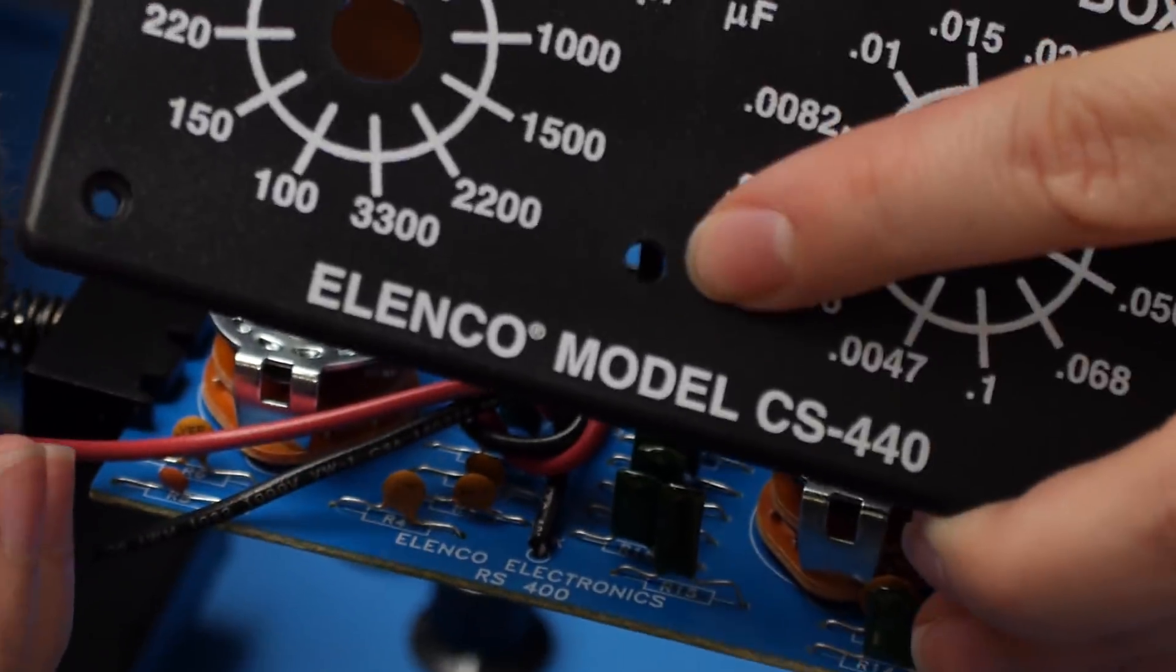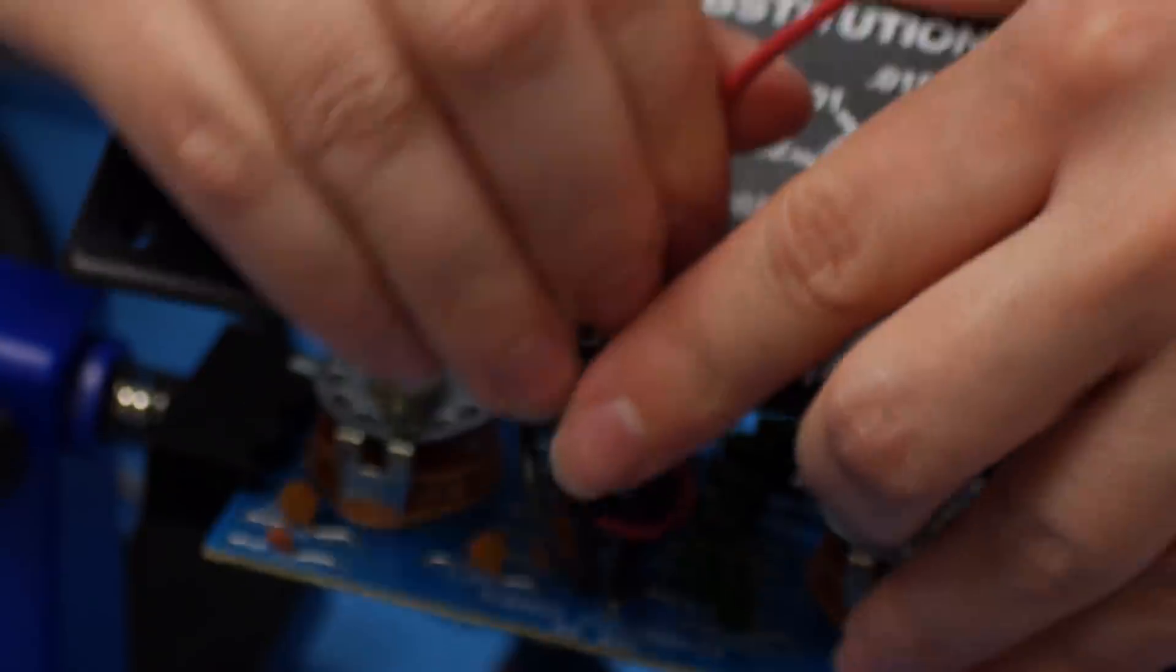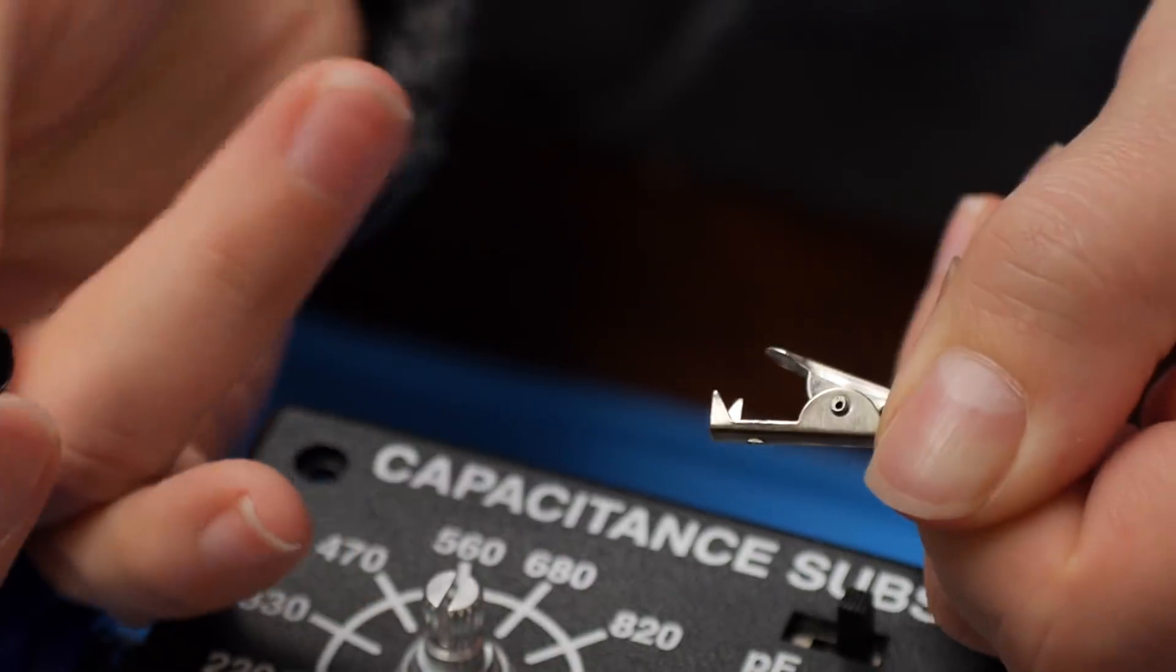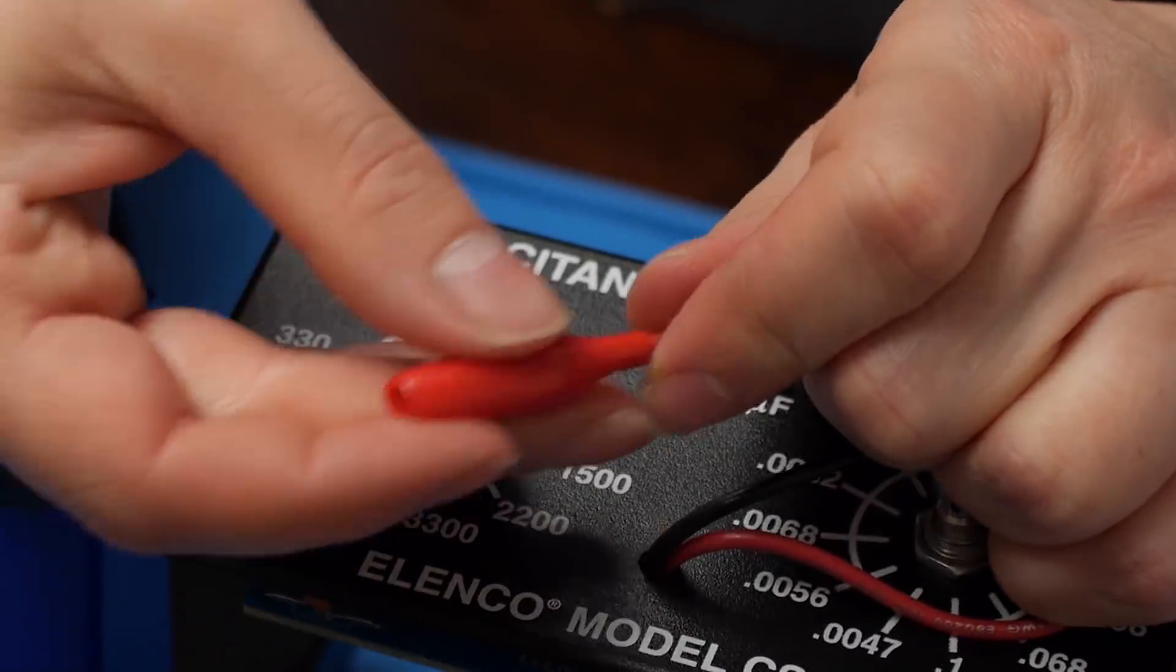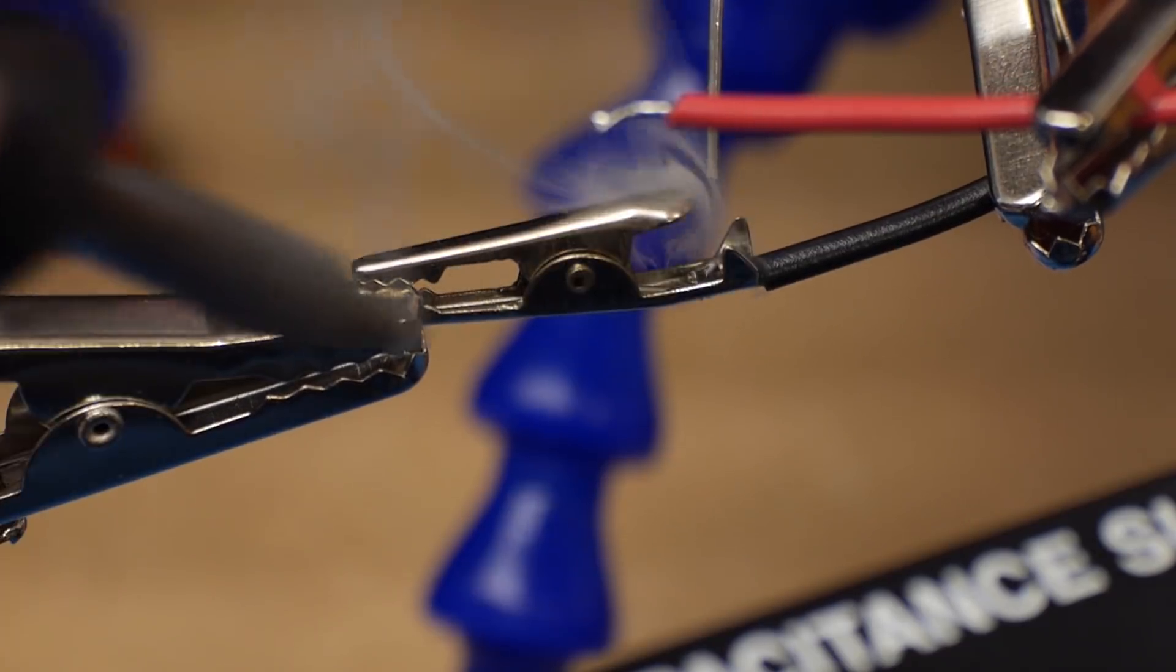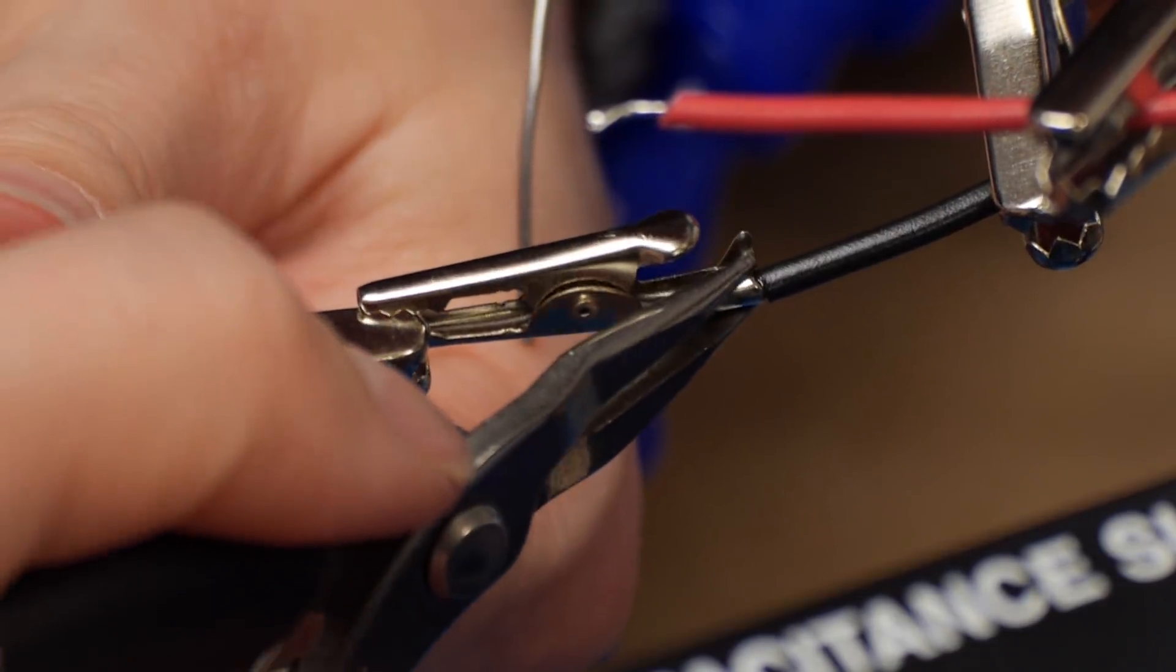Next, thread the wires through the hole in the faceplate. Next, take the alligator clips and remove the rubber. Thread the rubber onto the wires. Then take the alligator clips and solder them to the ends of the wires, replacing the rubber back onto the clip.